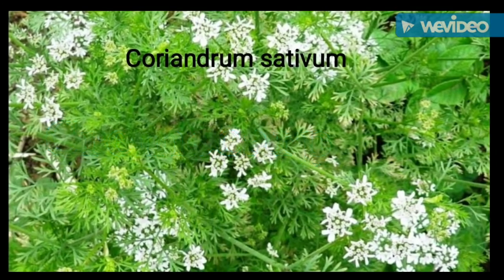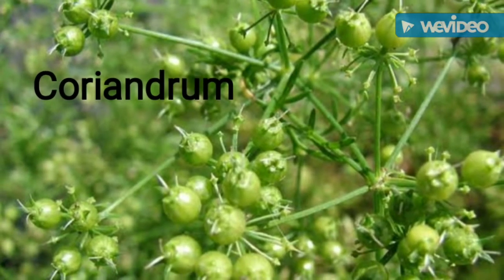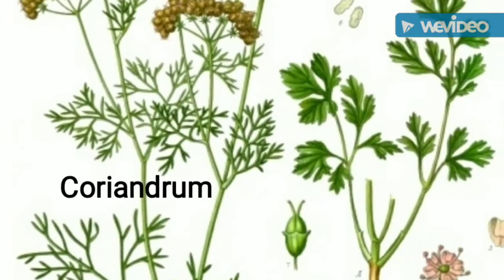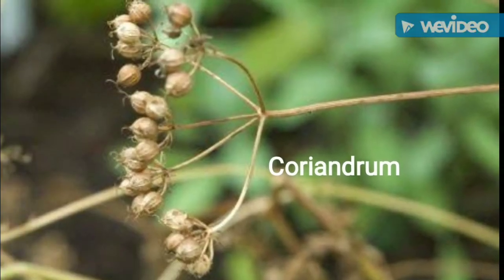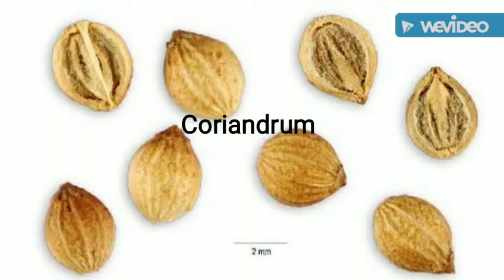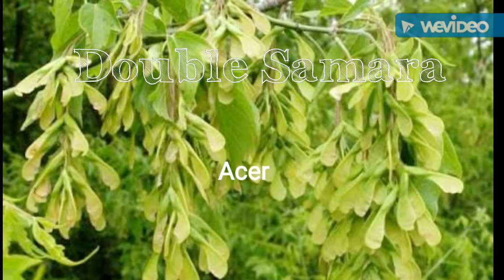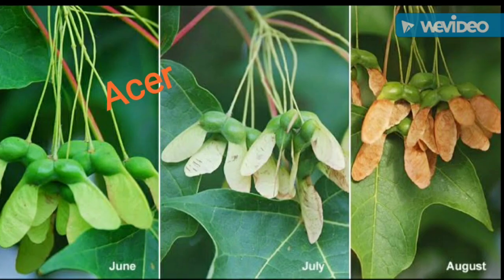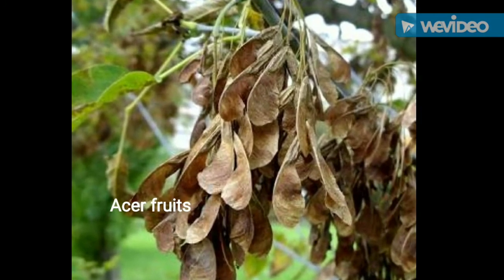Another one — cremocarp. It is developed from bicarpellary inferior ovary of bicarpellary syncarpous gynoecium. In between the carpels, a carpophore is present, which is along the thalamus. At the time of maturity, the fruit develops into two one-seeded mericarps attached to the carpophore. It is a characteristic feature of the Apiaceae family. Example: Coriandrum sativum. Another one — double samara. It is a schizocarpic fruit developed from a superior ovary of bicarpellary syncarpous gynoecium. The fruit separates into two samara-like mericarps.